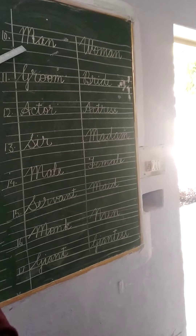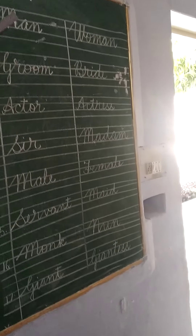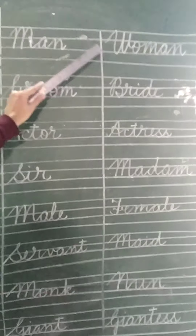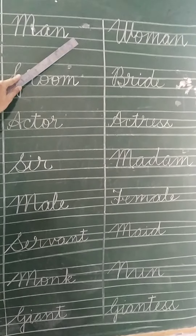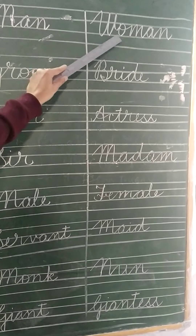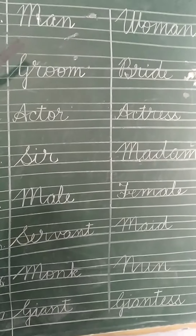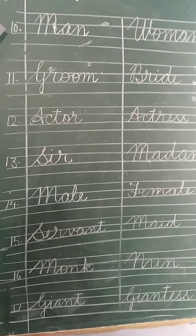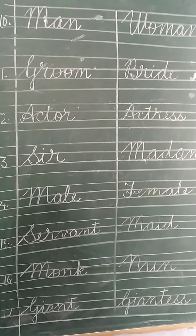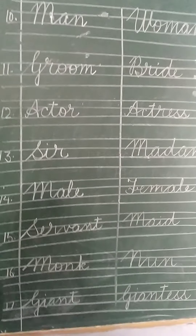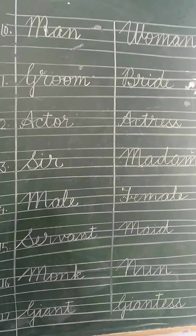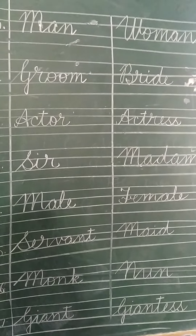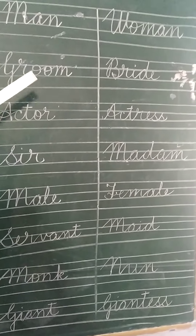Now, for today this is the last one. M-A-N — man. And the female version of man is woman — W-O-M-A-N. Students, this is your today's work. That's all for today. We will continue our work in the next video. You have to do your work in very neat and clean handwriting. This work we will continue tomorrow.